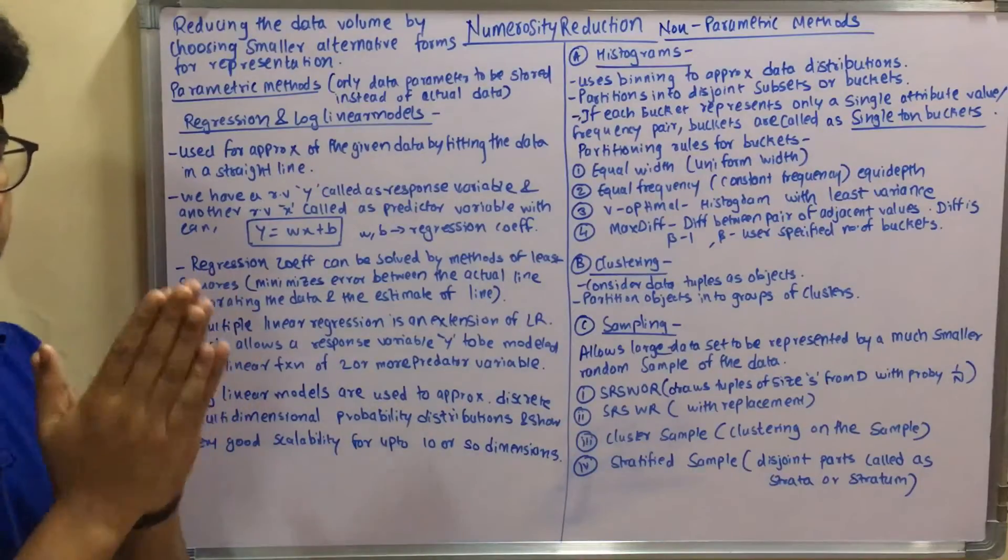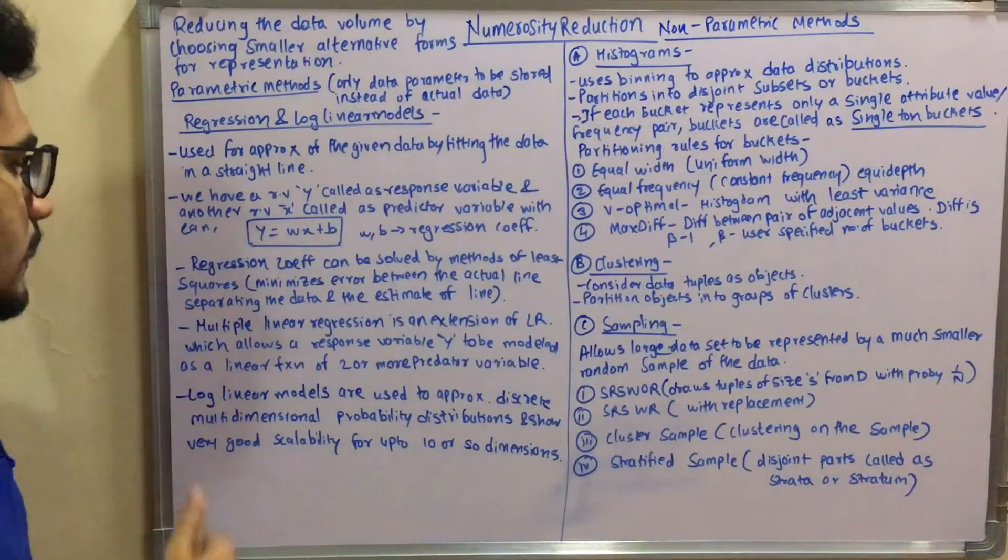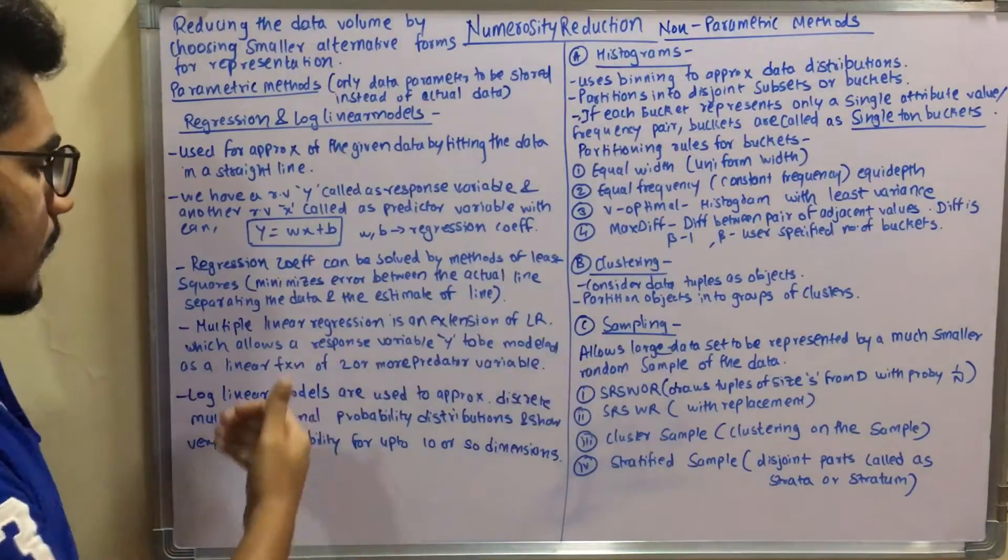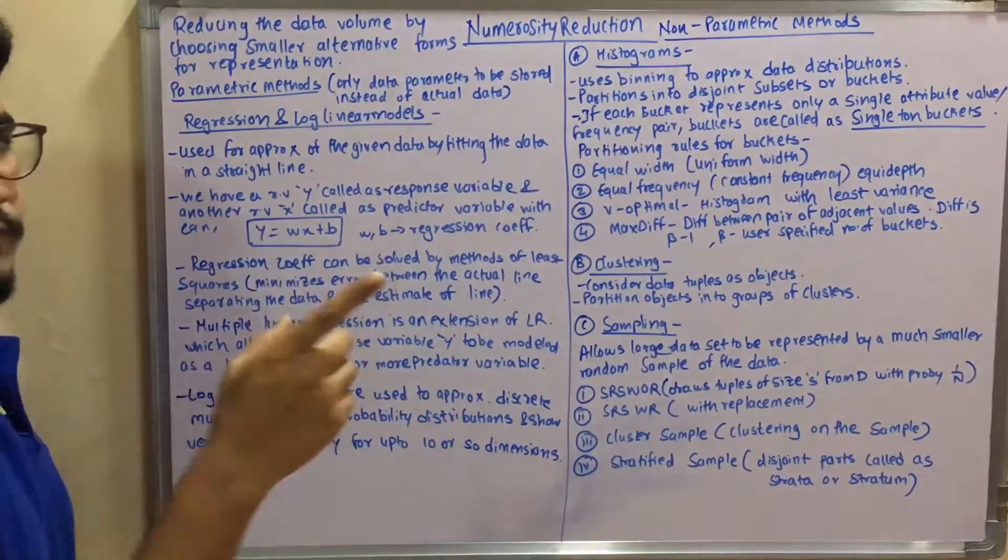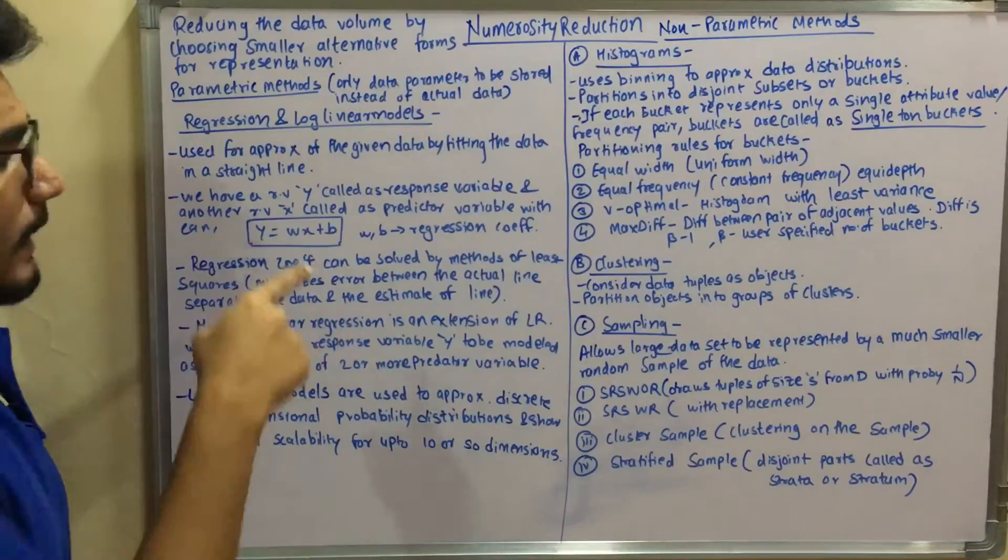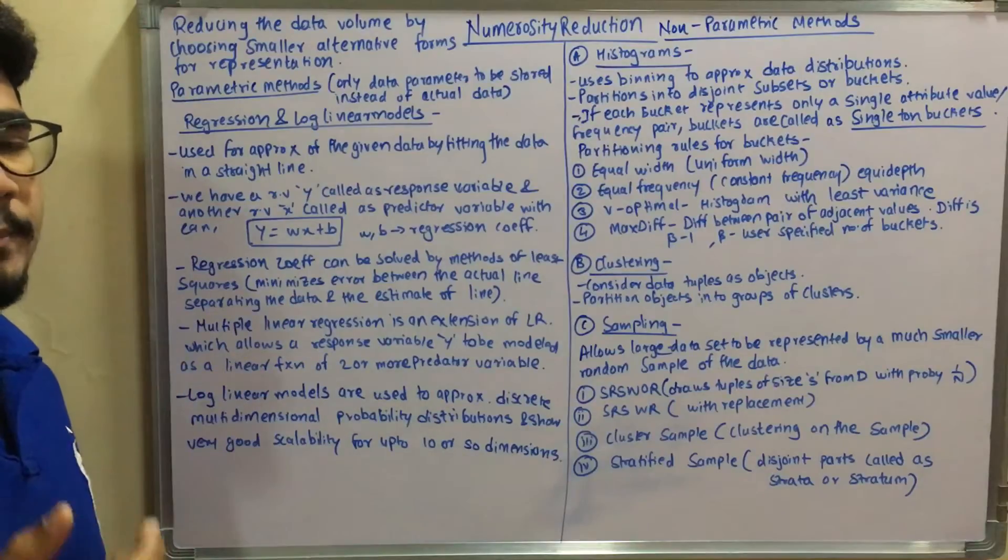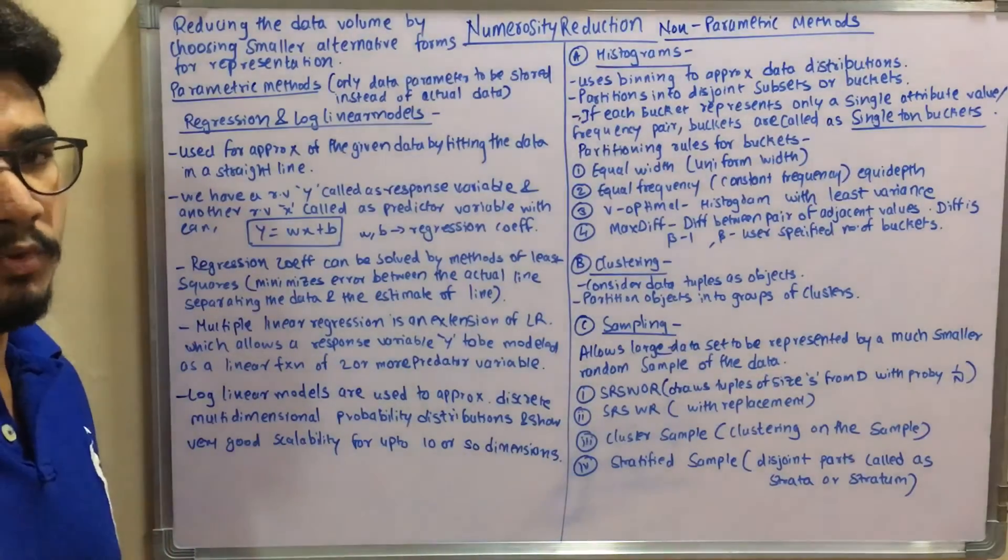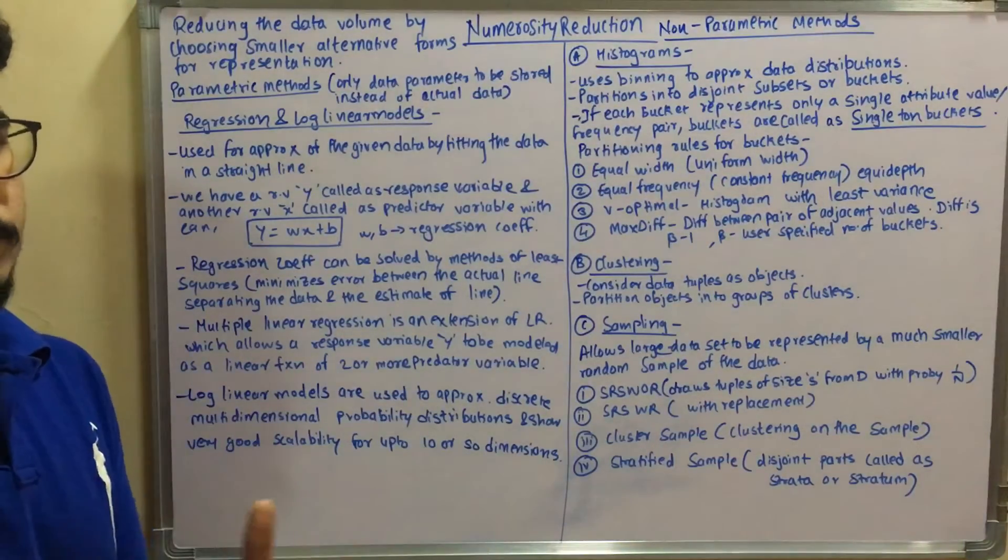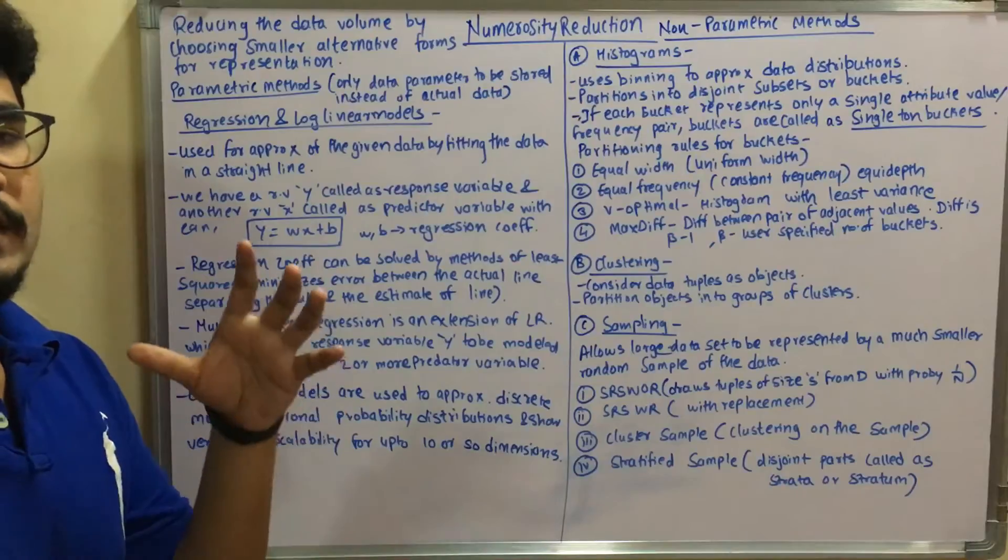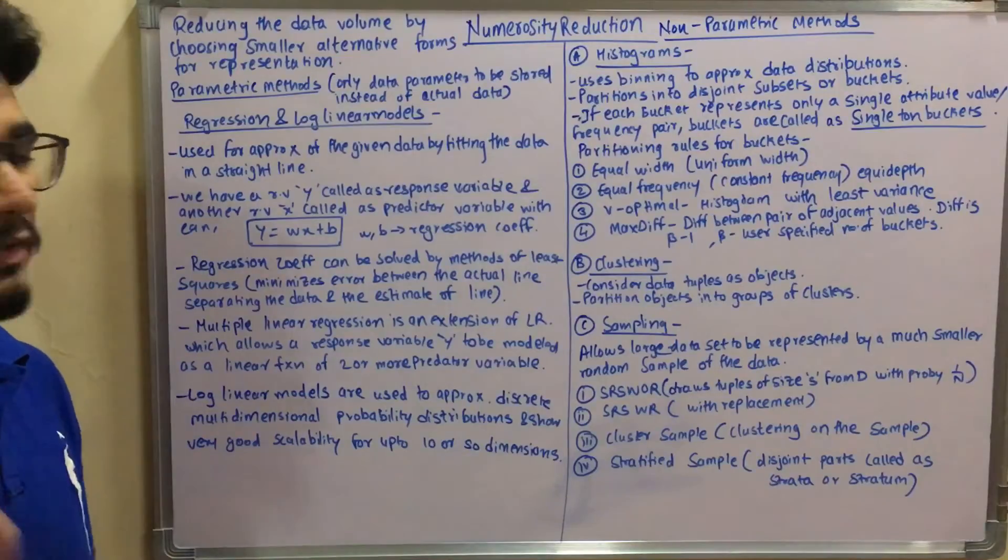And you have this equation: Y equals WX plus B, where W and B are the regression coefficients for this equation. You can solve this by the method of least squares. Now what least squares does is it minimizes the error between the actual line separating your data and the estimate of that line. So it's used for error detection and error reduction. And so we talk about the multiple linear regression, which is an extension of linear regression, which allows a response variable Y to be modeled as a linear function of two or more predictor variables.